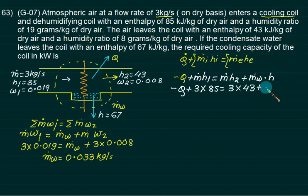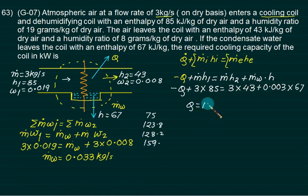M dot is 3 times 43 plus mass of water 0.033 times corresponding enthalpy 67. You can get this quantity. This answer is 123.8 kilowatts. This option is correct.